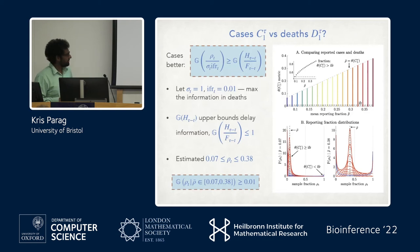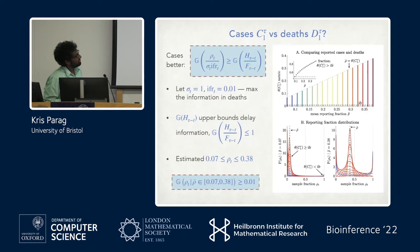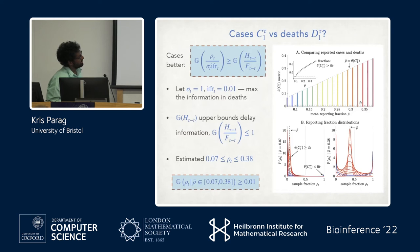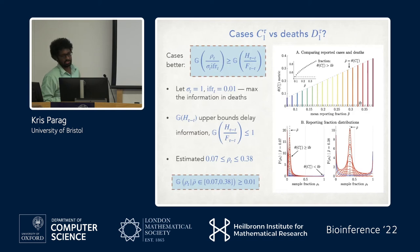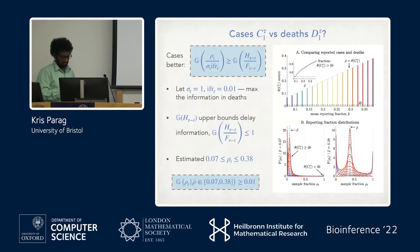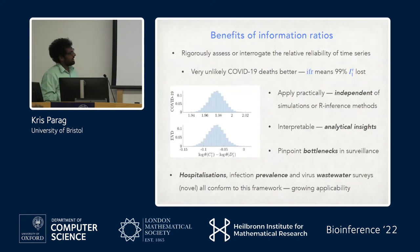The geometric mean of the reporting rates must be greater than or equal to about one percent. Looking at a range of distributions drawn from beta distributions, we find that for a lot of cases you can't say death data is more reliable for inferring R. Even at the very lowest reporting rate estimated from the literature — seven percent — about 45% of parameter combinations lead to case data being the more informative metric.